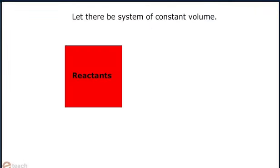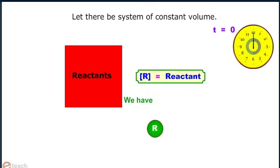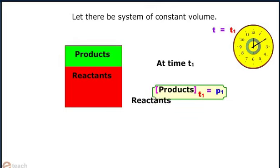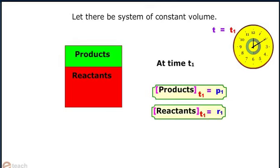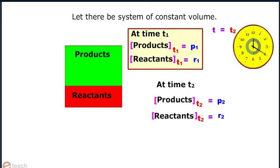Let there be a system of constant volume. We have a reactant R which on decomposition gives P. At time T1, the concentration of product is equal to P1 and that of reactant is equal to R1. At time T2, concentration of product is equal to P2 and that of reactant is equal to R2.